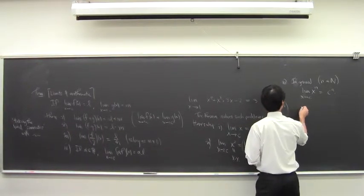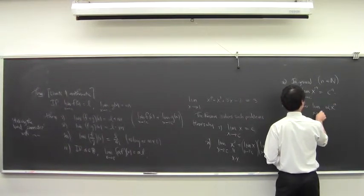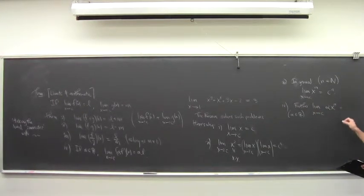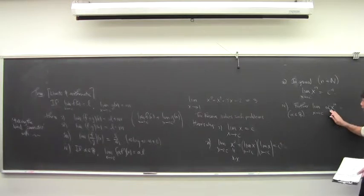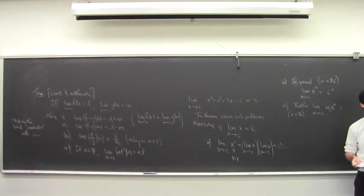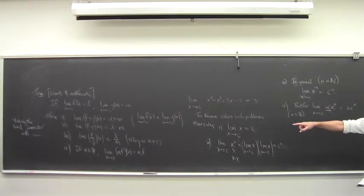Observation number four: the limit of alpha x to the n as x approaches c, where alpha is any fixed number, is going to be alpha c to the n — because of property number four.